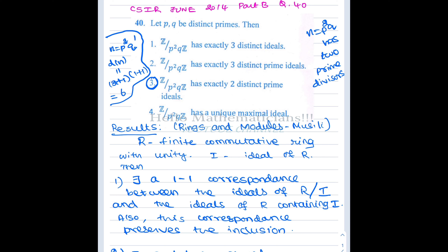Basically we want to understand the ring — how many ideals are there in Z mod nZ, how many maximal ideals, and how many prime ideals. Now Z mod nZ is a finite ring with n elements. In any finite ring, every maximal ideal is a prime ideal.